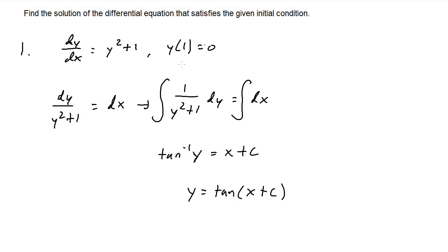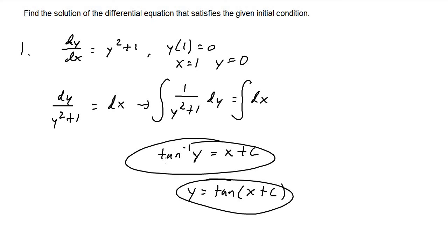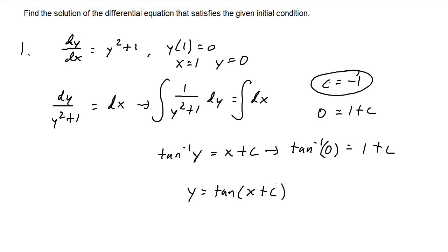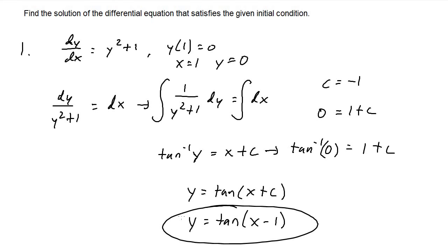Now we find the value of c using the initial condition y(1) = 0, meaning when x equals 1, y equals 0. Using the inverse tangent form, inverse tangent of 0 equals 1 plus c. Inverse tangent of zero is zero, so 0 equals 1 plus c, meaning c equals negative one. Substituting back, y equals tangent of (x minus 1), and that is the exact solution to the differential equation given the initial condition.